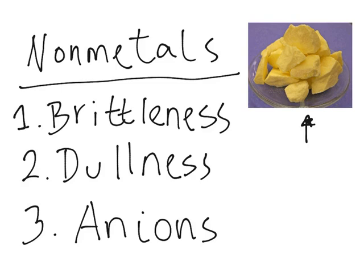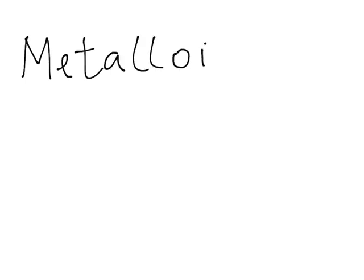There is another category under which elements can fall, and that is the metalloids. Metalloids are just in between the metals and the non-metals. They kind of share characteristics of both metals and non-metals, but they are not classified as either. Elements that do this are put into this group.